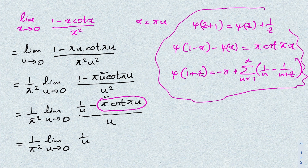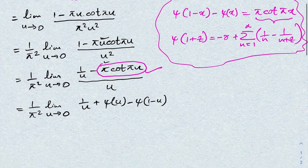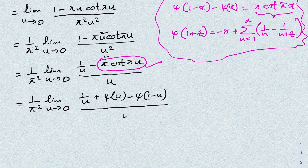All these relations were proved in a previous digamma function video; I'll add the link in the description. Now, instead of π·cotangent(π·u), using the reflection formula with a sign change we get plus ψ(u) minus ψ(1−u), so our expression becomes (1/π²) times the limit as u→0 of (1/u + ψ(u) − ψ(1−u)) over u.